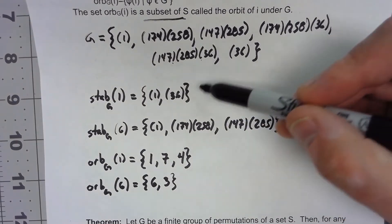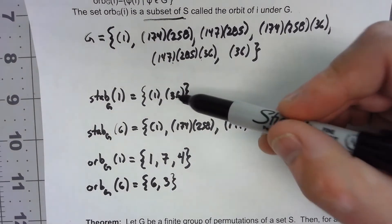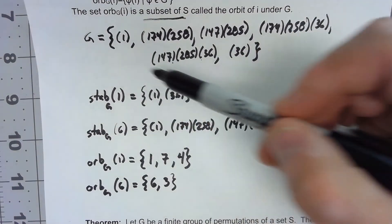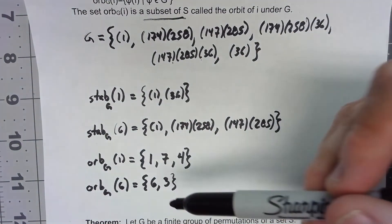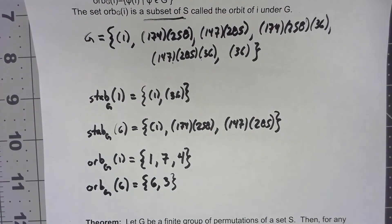Again, the stabilizers are permutations. The stabilizer is a subset of G. The orbit is a subset of the things that are being permuted.